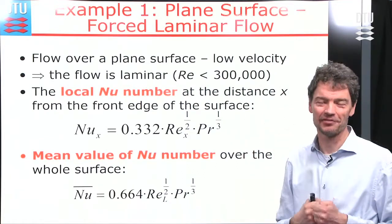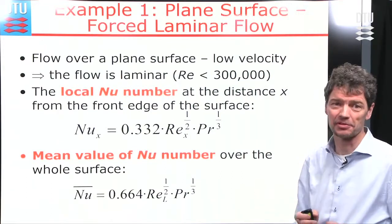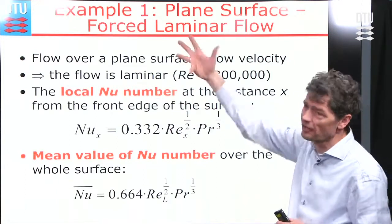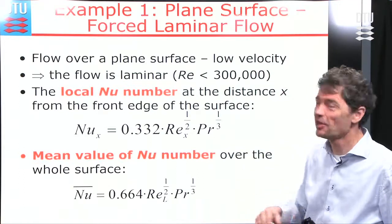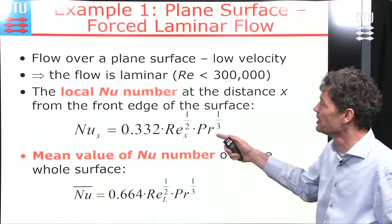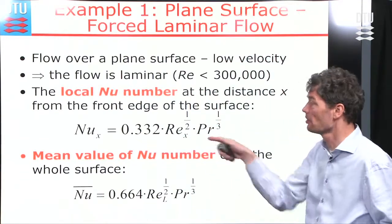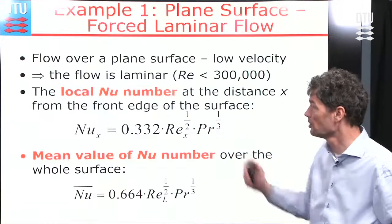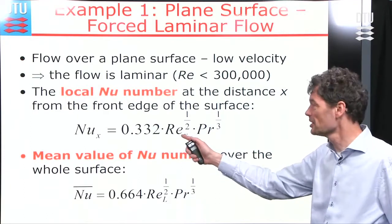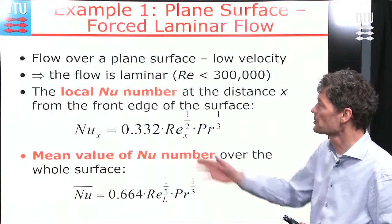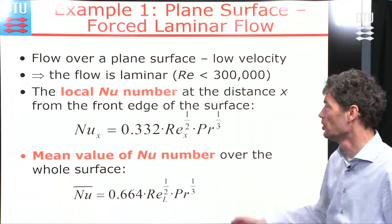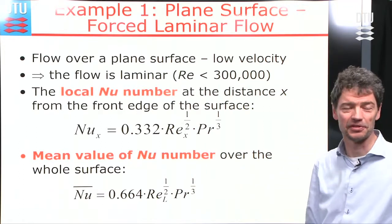For the rest of the lecture, I have six examples of cases from literature where the Nusselt number has been found. Example one: a flat surface with forced laminar flow (Reynolds number less than 300,000). The local Nusselt number at position x uses a formula with the Reynolds number and Prandtl number. For the average Nusselt number over the whole surface, it is essentially the same formula but with the coefficient doubled.